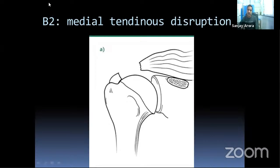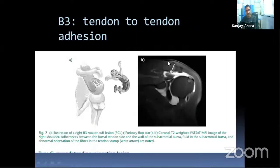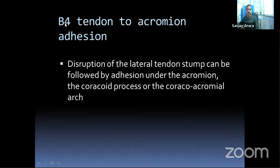Injuries at the tendinous level include medial tendinous disruption, where tendon units retract medially. A newly described entity is tendon-to-tendon adhesion, where the tendon avulses from the greater tuberosity, rolls back, and fuses to its musculotendinous unit — described as a very rolled-up or clogged appearance, visible on MRI as increased bursal-side thickness. Tendon-to-acromion adhesions can also occur where disrupted lateral tendon adheres under the acromion or coracoacromial arch.